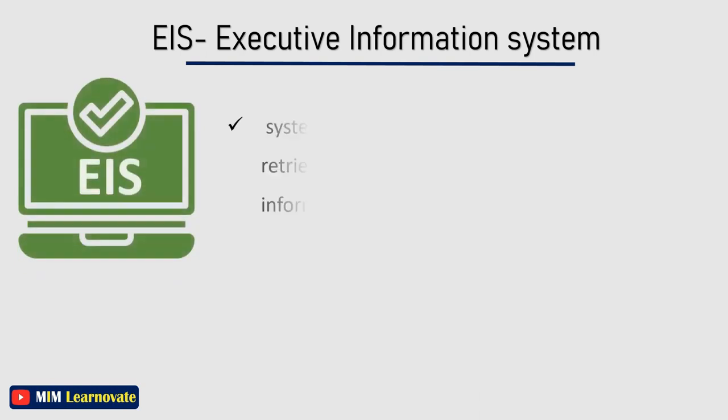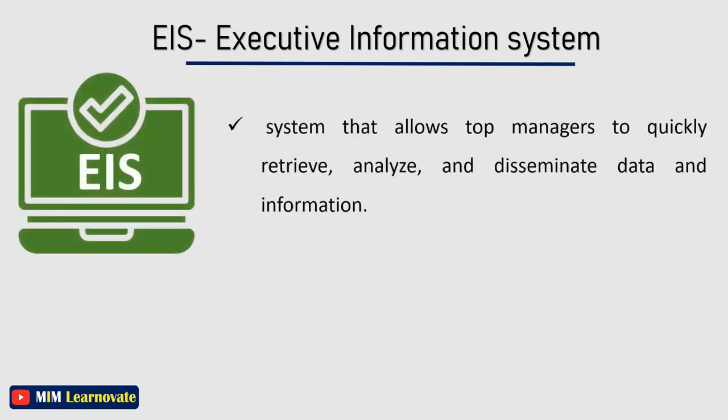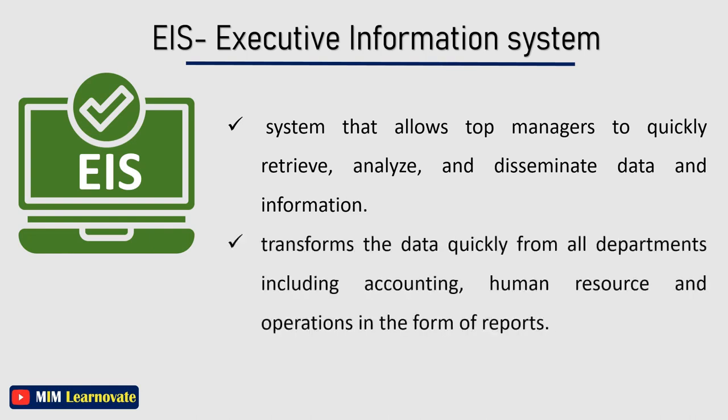Executive Information System is a system that allows top managers to quickly retrieve, analyze, and disseminate data and information. It transforms data quickly from all departments including accounting, human resources, and operations in the form of reports.